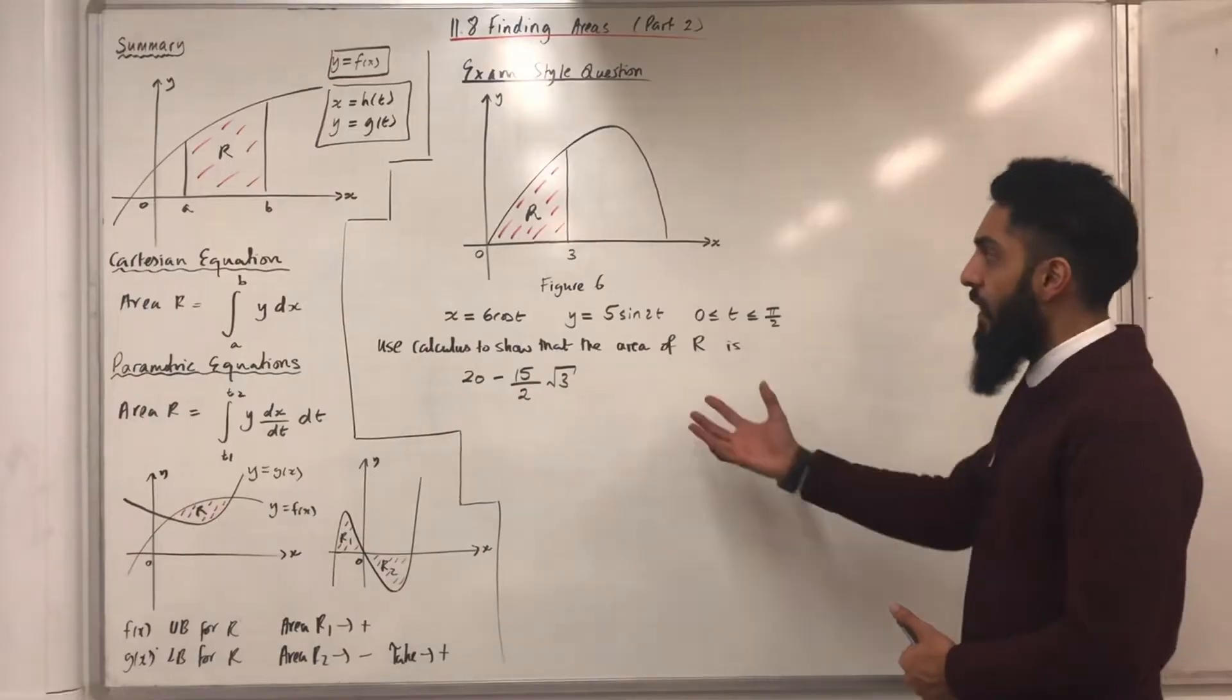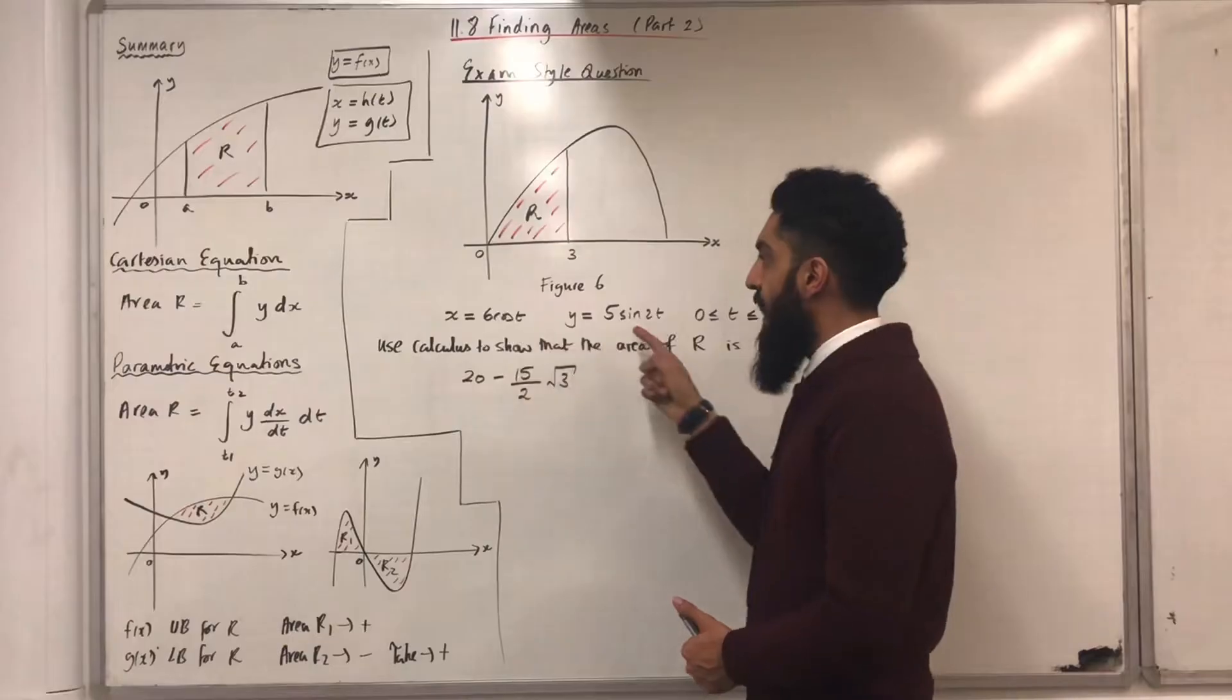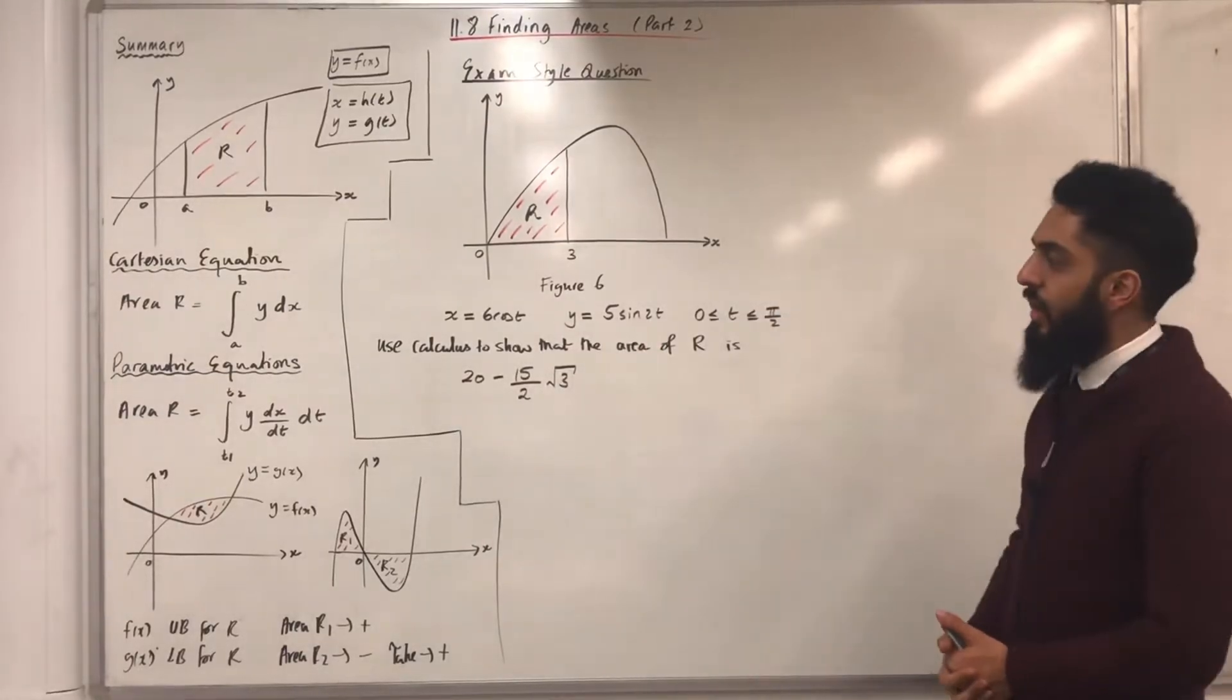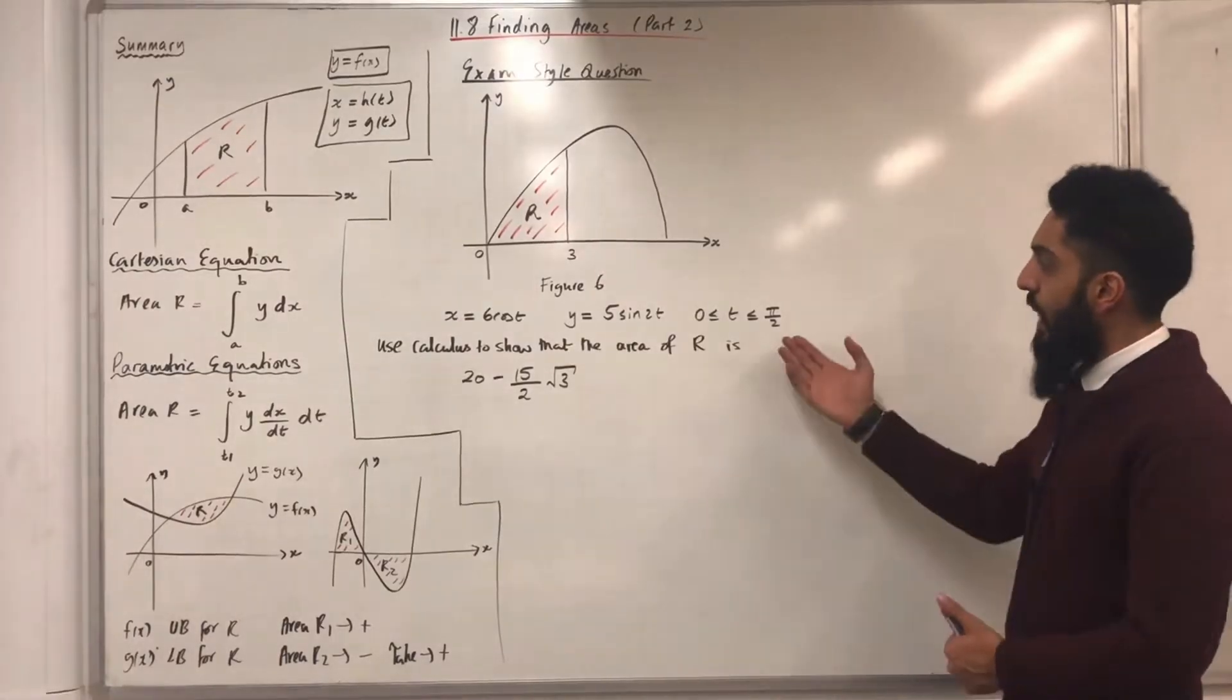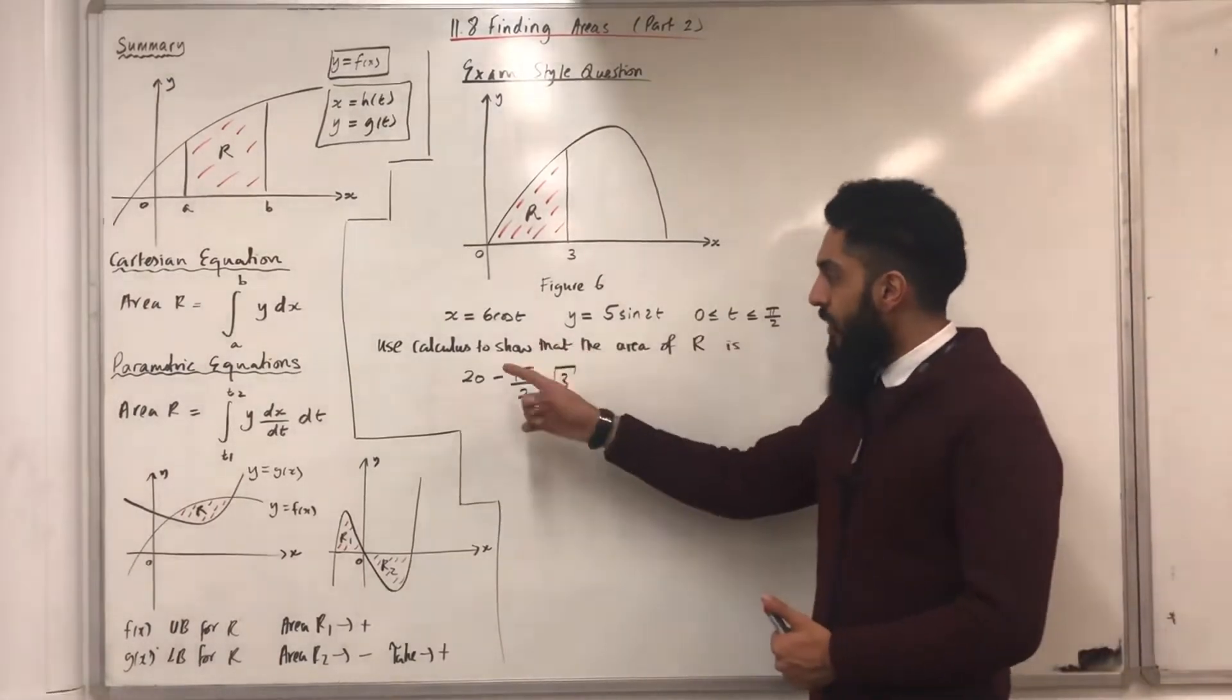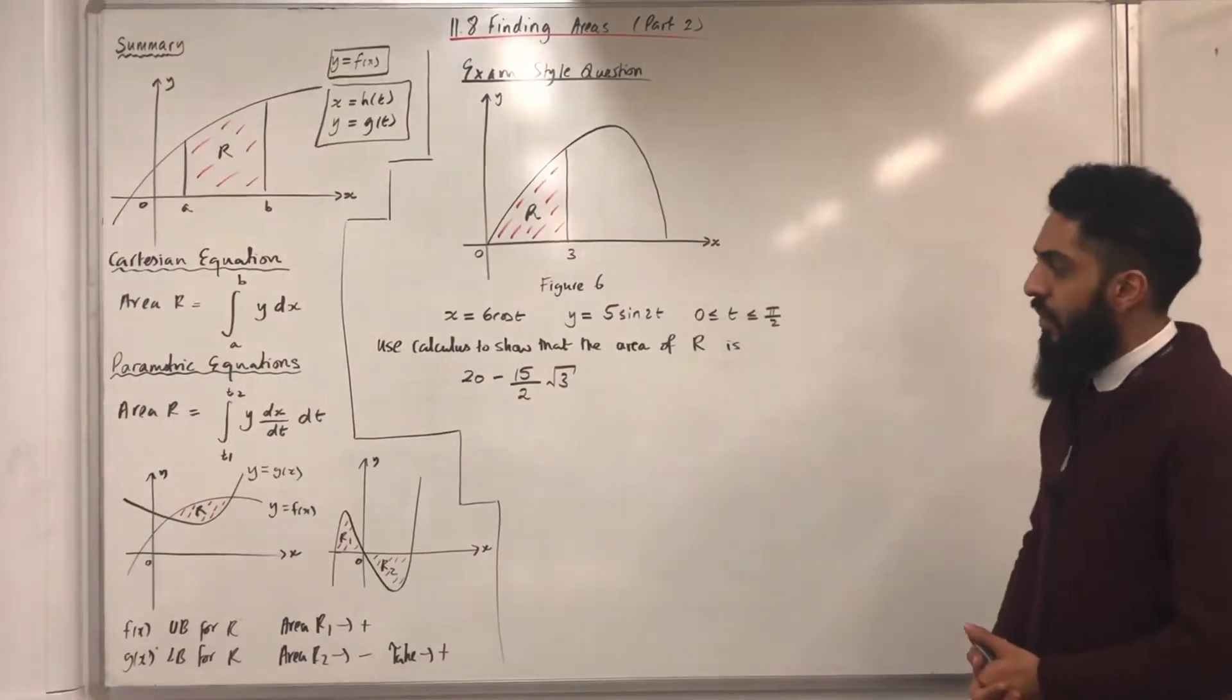Over here, I have another exam-style question. Figure 6 shows the curve given parametrically by the equations x equals 6 cos t, y equals 5 sine 2t, where t is more than or equal to 0 but less than or equal to pi over 2. Use calculus to show that the area of R is given by 20 minus 15 over 2 square root 3.